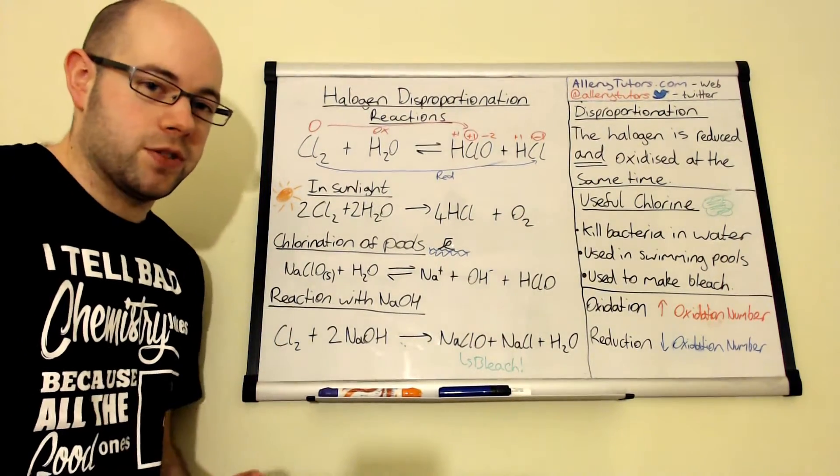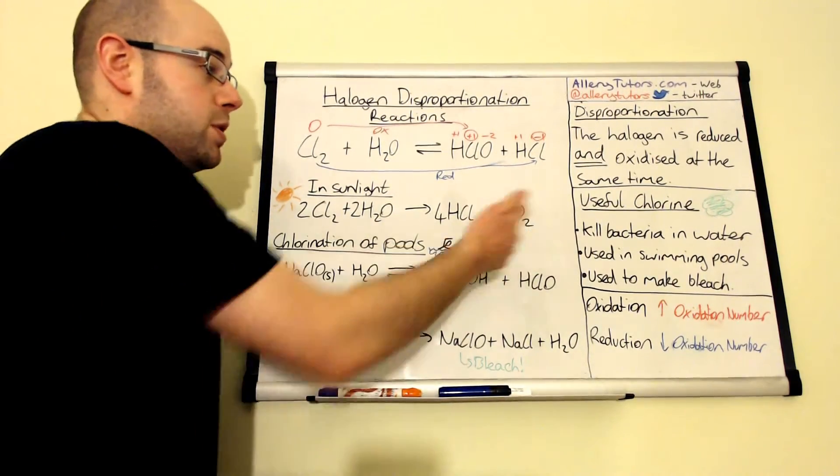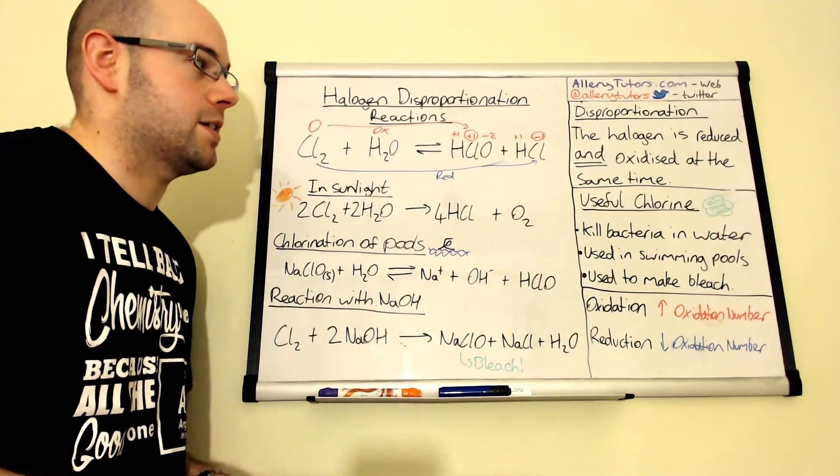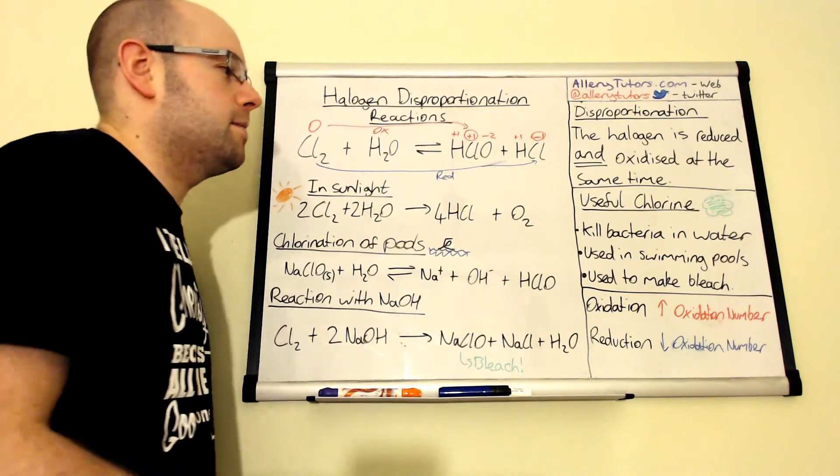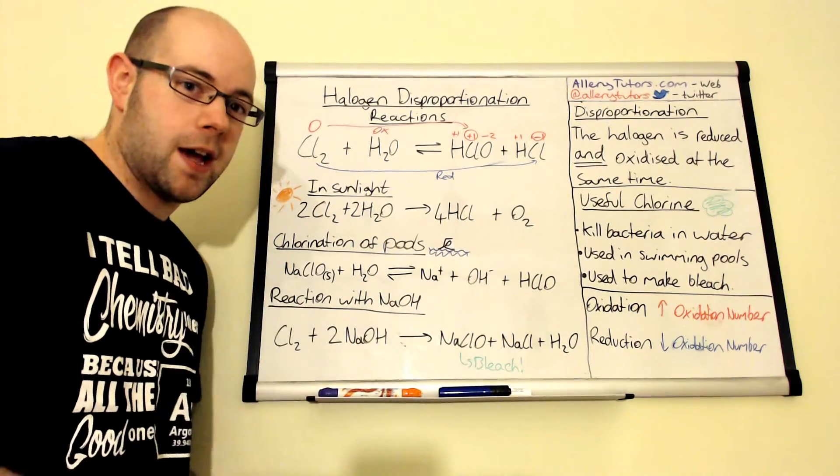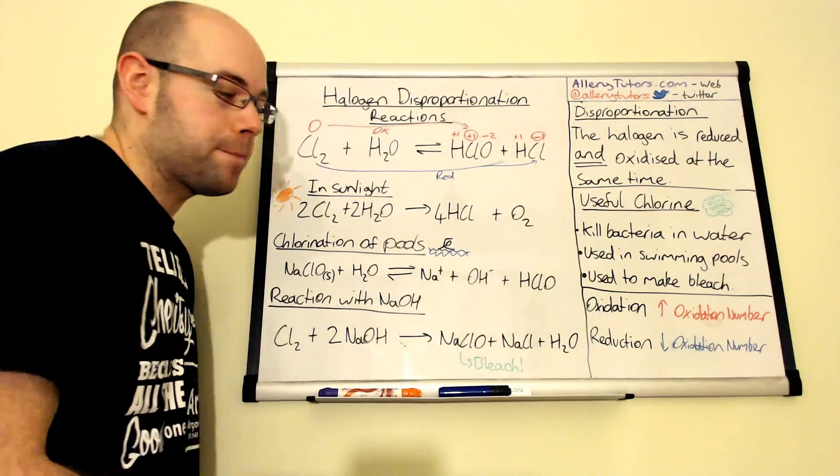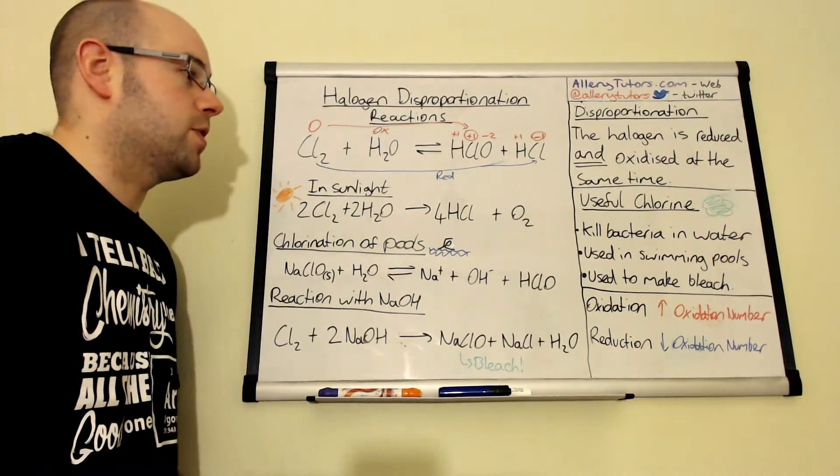Now chlorine is used in a lot of different things in society. For example, we can use it to kill bacteria in water, as with fluoride as well that's added in there. It's used in swimming pools a lot to kill off bacteria in public baths and even in private pools as well. And it's used to make bleach as well. I'm going to look at all three of them really.